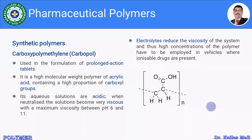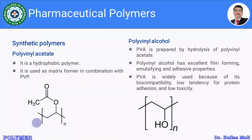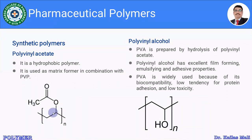The next polymer is polyvinyl acetate. It is a hydrophobic polymer and is widely used as a matrix former in combination with polyvinyl pyrrolidone. Polyvinyl pyrrolidone acts as a pore former, which forms pores in the matrix.